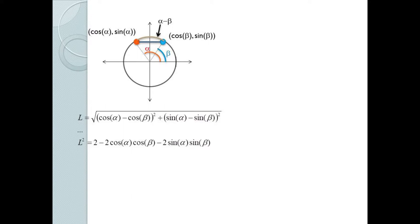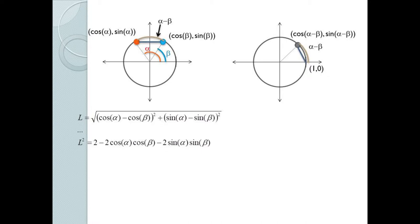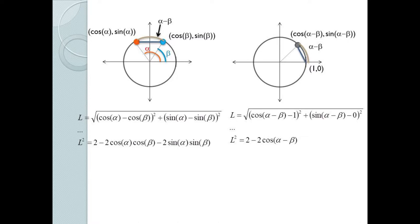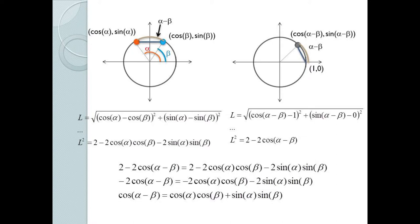Using the distance formula we get L equals the square root of (cos α − cos β)² plus (sin α − sin β)². Now if we revolve the angle alpha minus beta so that the initial side is on the x-axis, the same line segment connects the point (1, 0) to (cos(α − β), sin(α − β)). Squaring both sides and using some basic algebra we get our result: cos(α − β) = cos α cos β + sin α sin β.